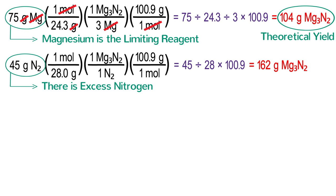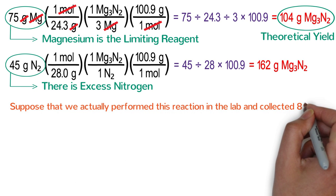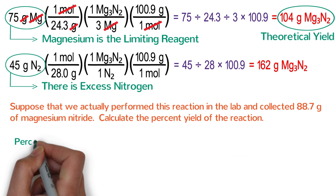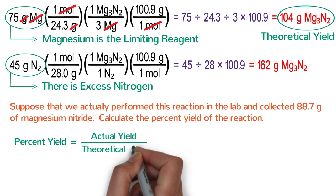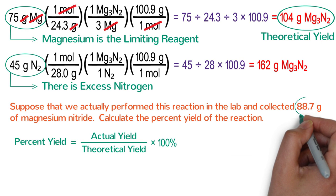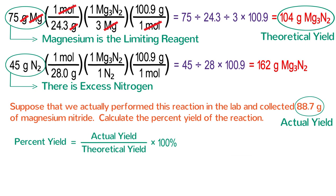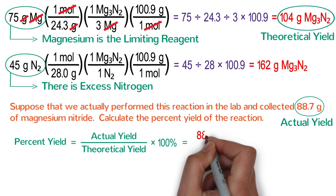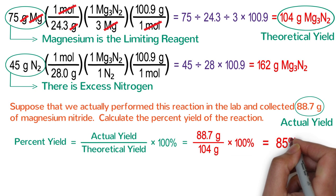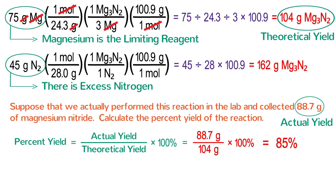Suppose we performed this reaction in the lab and collected 88.7 grams of magnesium nitride. To calculate percent yield: divide actual yield by theoretical yield and multiply by 100. The actual yield of 88.7 grams divided by the theoretical yield of 104 grams times 100% equals approximately 85%, which is a very reasonable yield. Remember: the limiting reagent produces the least amount of product, and that least amount is the theoretical yield.